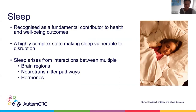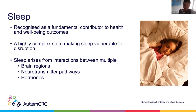Firstly I'd like to lay a foundation as to why it's so important to continue to investigate sleep problems in autism by briefly looking at sleep in general. It's good to see that sleep has finally been recognised as a fundamental contributor to health and wellbeing outcomes. However, a good night's sleep is not easily achieved, as sleep is a highly complex state making it vulnerable to disruption. Sleep arises from interactions between multiple brain regions, multiple neurotransmitter pathways and multiple hormones, which all contribute to finely tuned mechanisms. Therefore, the quality of our sleep is exposed to vulnerabilities from multiple potential stresses.